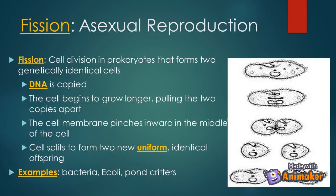Binary fission is cell division in prokaryotes that forms two genetically identical cells. The DNA is copied, the cell begins to grow longer pulling the two copies apart, and the cell membrane pinches inward in the middle of the cell. The cell then splits to form two new, uniform, and identical offspring.